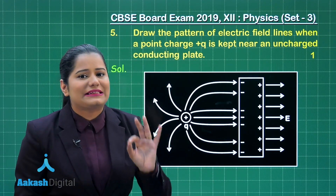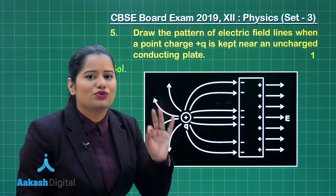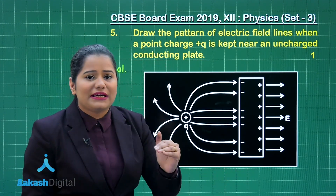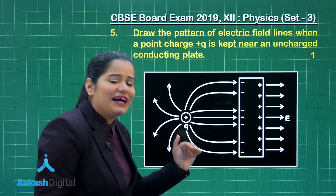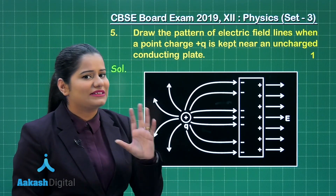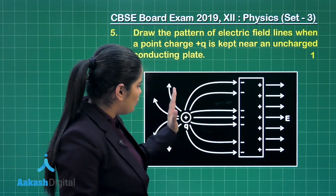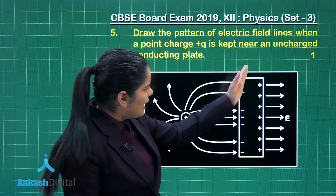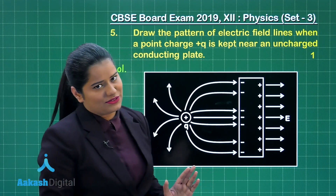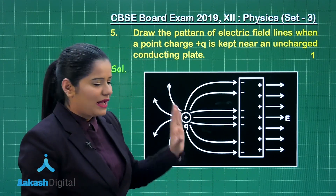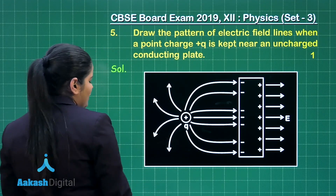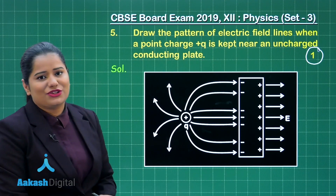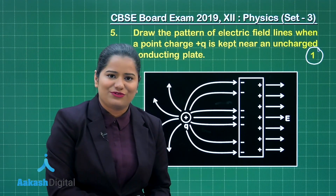No electric field lines are drawn inside the conducting plate because the electric field inside any conductor is zero. The region of the plate close to the positive charge will have negative charge induced, and positive charge will be induced on the far region. This is how you need to draw this diagram, and for this you are going to score one mark. I hope this discussion is clear. Let us move on to the next question.